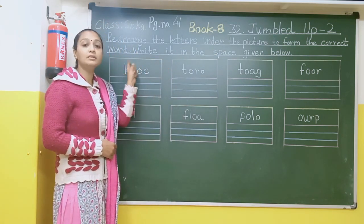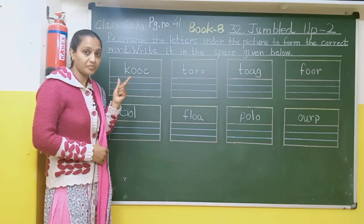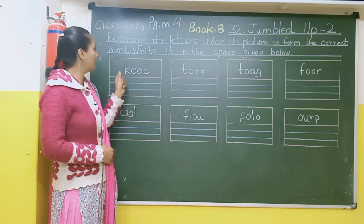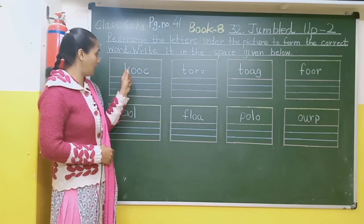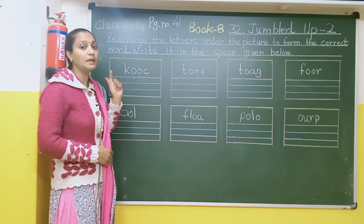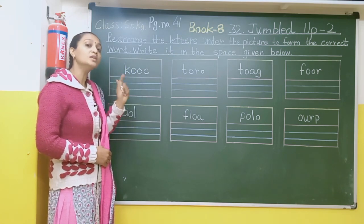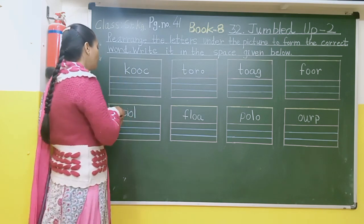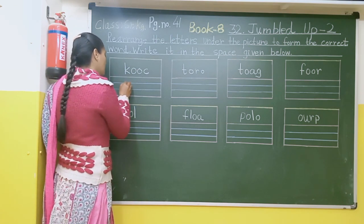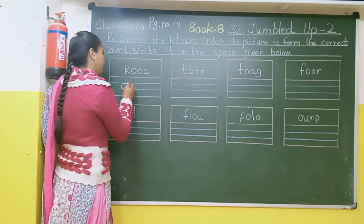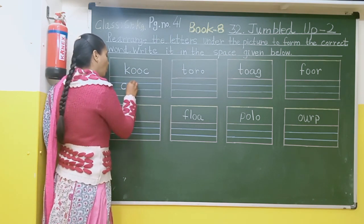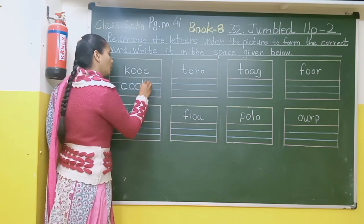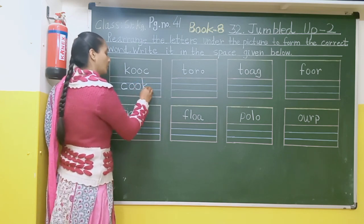Here there is an image of a cook. So here I will write C-O-O-K. Cook.